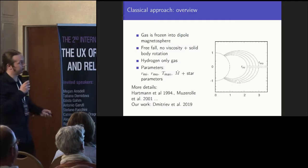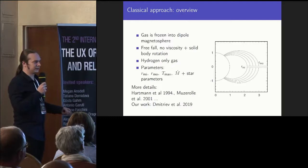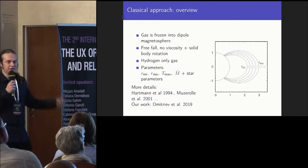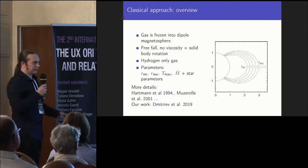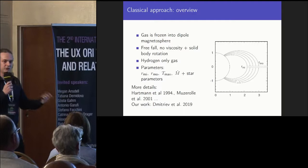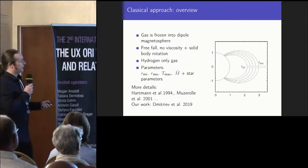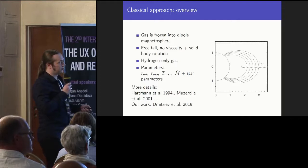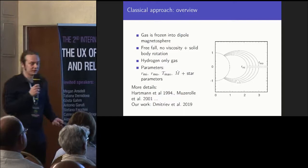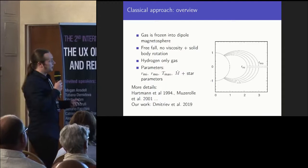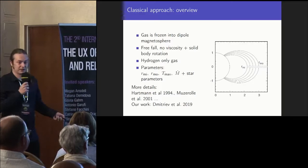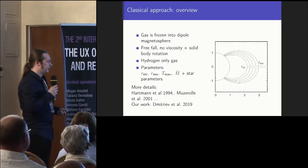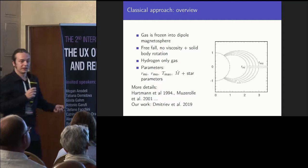At first, we take the classical approach that was firstly published in Hartmann et al. work in 1994. Then it was further developed in Muzerolle et al., and Lima et al., and further. And here are the assumptions for this model. The gas is completely frozen into the magnetosphere, it's free falling, no viscosity, and also there is solid body rotation, so there's no distortion in the magnetosphere during the rotations. And it is a hydrogen-only gas, and here's a small sketch of the magnetosphere. It has the inner radius, RMI, and outer radius, RMO, and the gas flows from the disk to the star along the dipole magnetic field lines. So, there are four main parameters in this model. It's inner radius, outer radius, maximum temperature in the magnetosphere, and, of course, the accretion rate. Of course, more details you can find in Hartmann work itself, and more details about this model, which is not really varied from Hartmann model, you can find in our work.